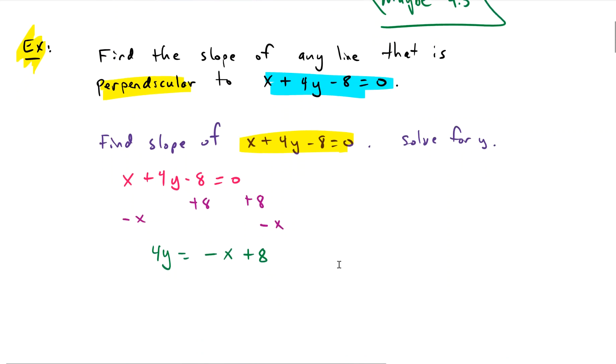Then we need to divide by 4 everywhere. So we get our answer. When we solve for y, we get y equals negative 1 fourth x plus 2.